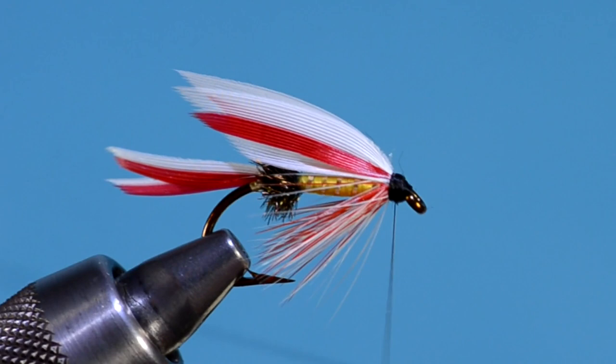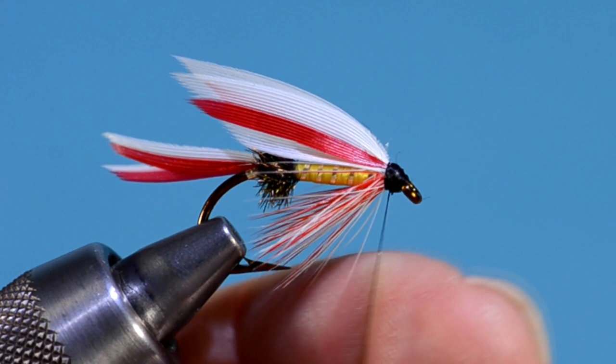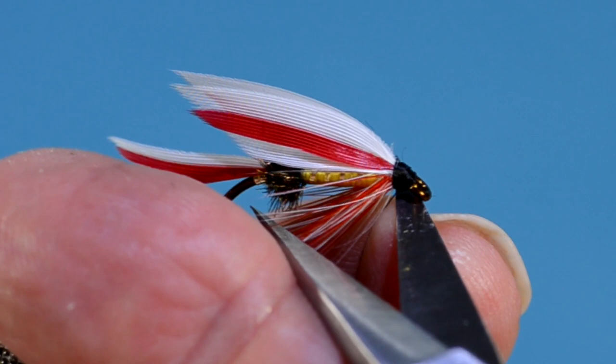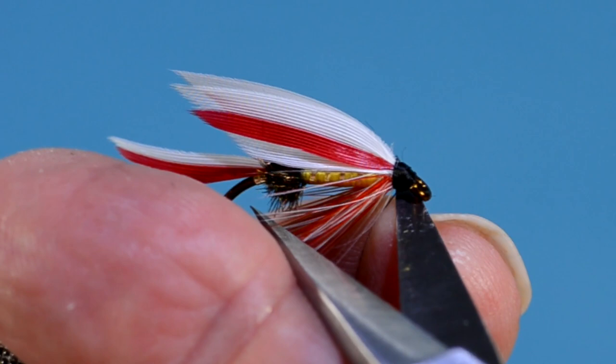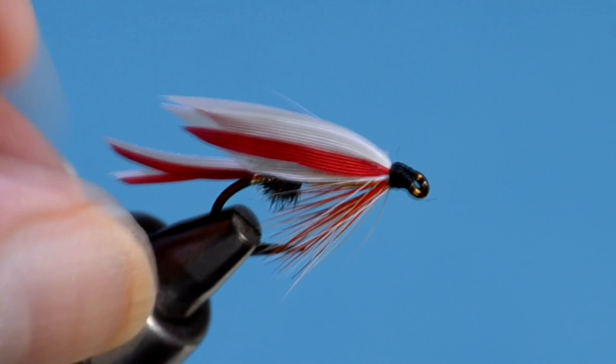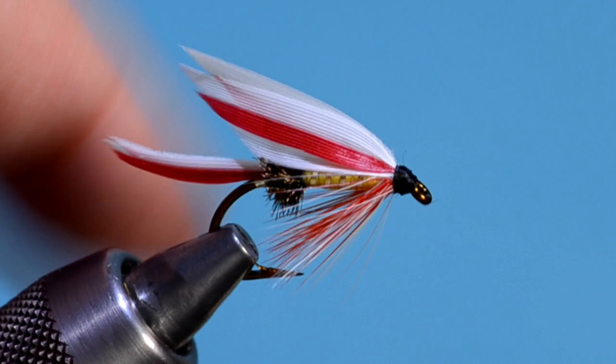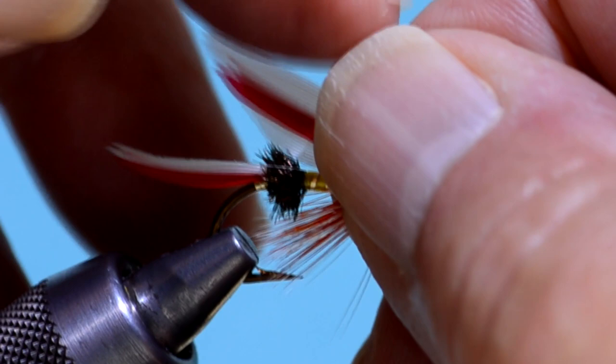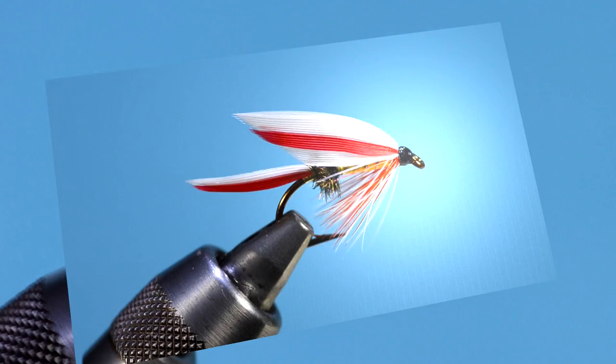Truth be told, I screwed up the first whip finish I tried on this fly. I haven't done that in a while. So this is the second go. You can almost always save a fly. Just backtrack a little bit. Be sure to spend a lot of time primping this stuff. Here's the final fly after considerable primping and fluffing and gluing.